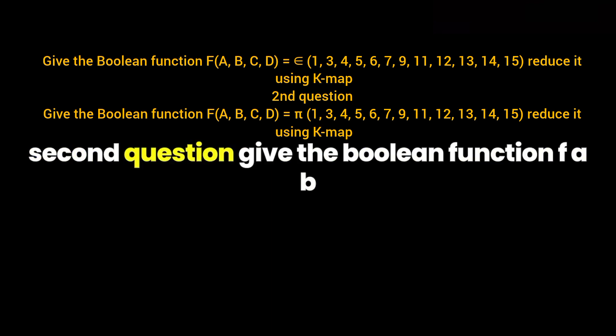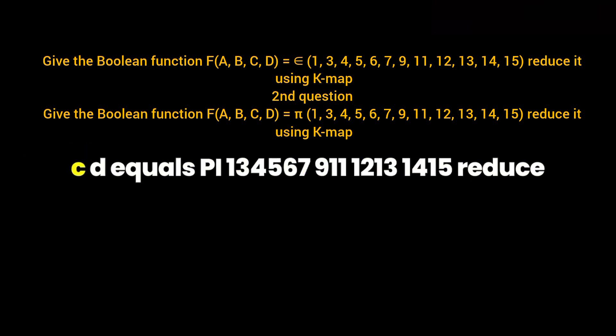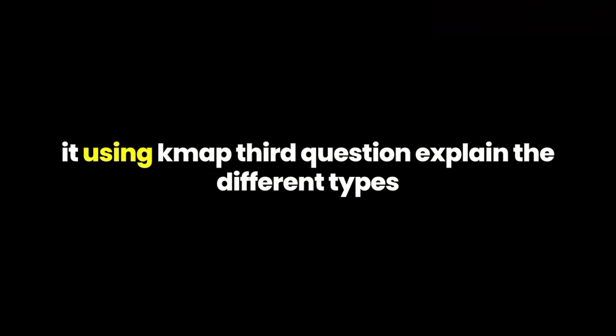Second question: Give the Boolean function F(A, B, C, D) = π(1, 3, 4, 5, 6, 7, 9, 11, 12, 13, 14, 15). Reduce it using K-map.